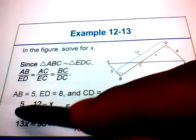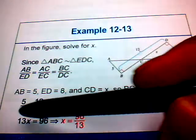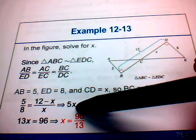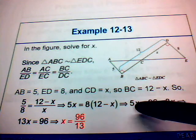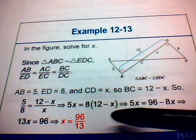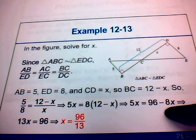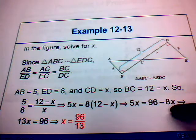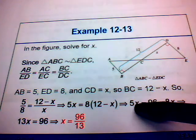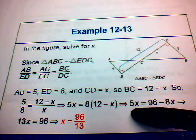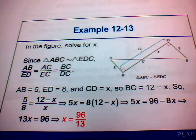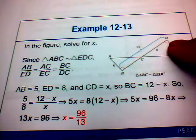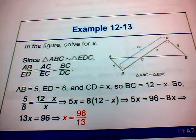We cross-multiply: 5 times X equals 8 times (12 minus X), giving 5X equals 96 minus 8X. Adding 8X to both sides: 13X equals 96. Dividing both sides by 13, X equals 96 over 13. So X, which is the length of CD, is 96 over 13.